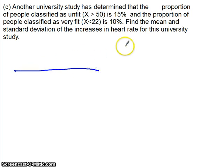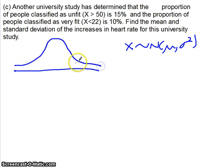The first thing to do is to write down, this is a normal distribution, but we don't know what these values are yet. What we do know is that greater than 50 is 15%, that's 0.15, and less than 22 is 10%, so 0.1. And we can use that information to try and work this out, but what we're going to have to do is convert this to a standard normal distribution.